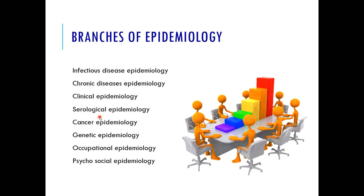Serological epidemiology looks at how infection produces herd immunity, which immunoglobulin is increasing, which type of immunity gives defensive control against a particular disease, and which antibody titer shows prognosis. Genetic epidemiology — we are concerned with genetics; for example, thalassemia major is much more prevalent in Pakistan because of cousin marriages, and we need to collect data to curtail this genetic disease. Occupational epidemiology looks at occupational diseases prevalent in certain occupational settings. Psychosocial epidemiology examines risk factors affecting the psychosocial health of human beings in specific areas and populations. So epidemiology has a much broader scope.